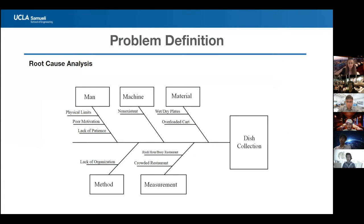This is the root cause analysis we have done for the problem. There are five categories we looked into: man, machine, material, method, and measurement. Overall, these problems are under the umbrella of the dish collection problem.